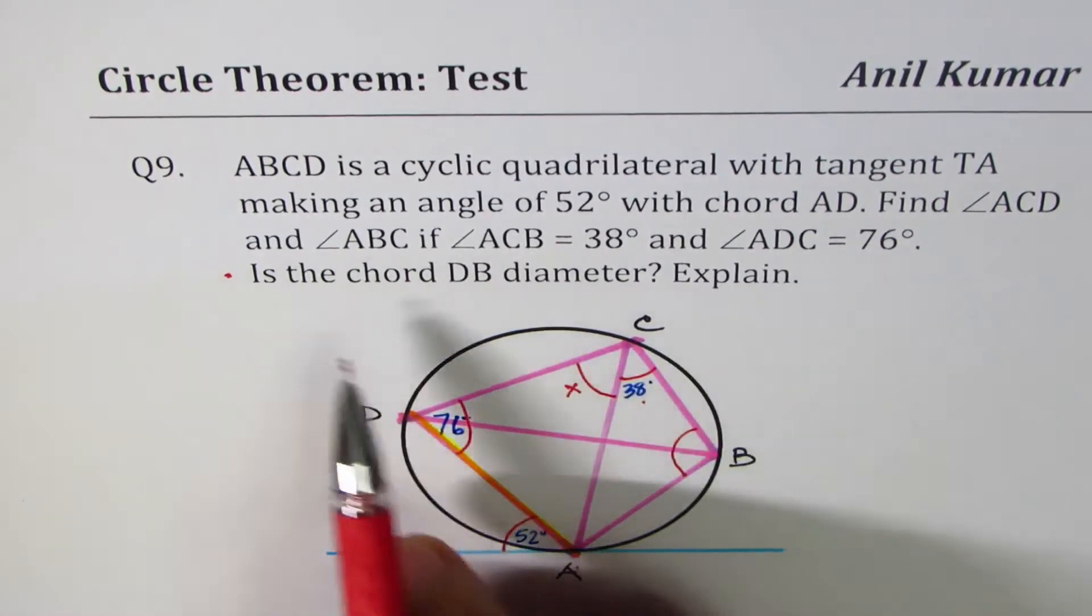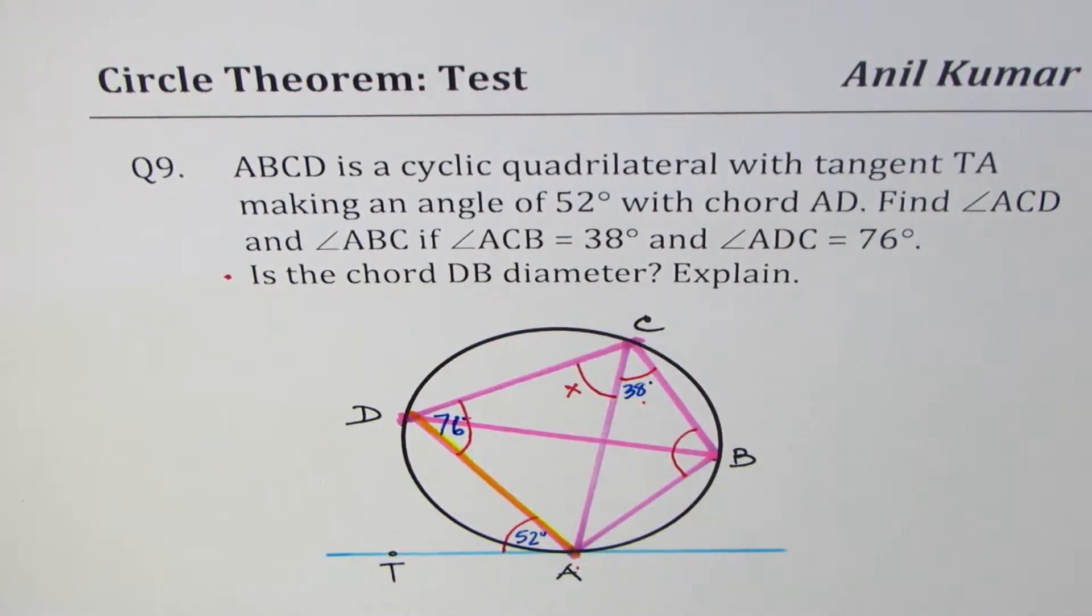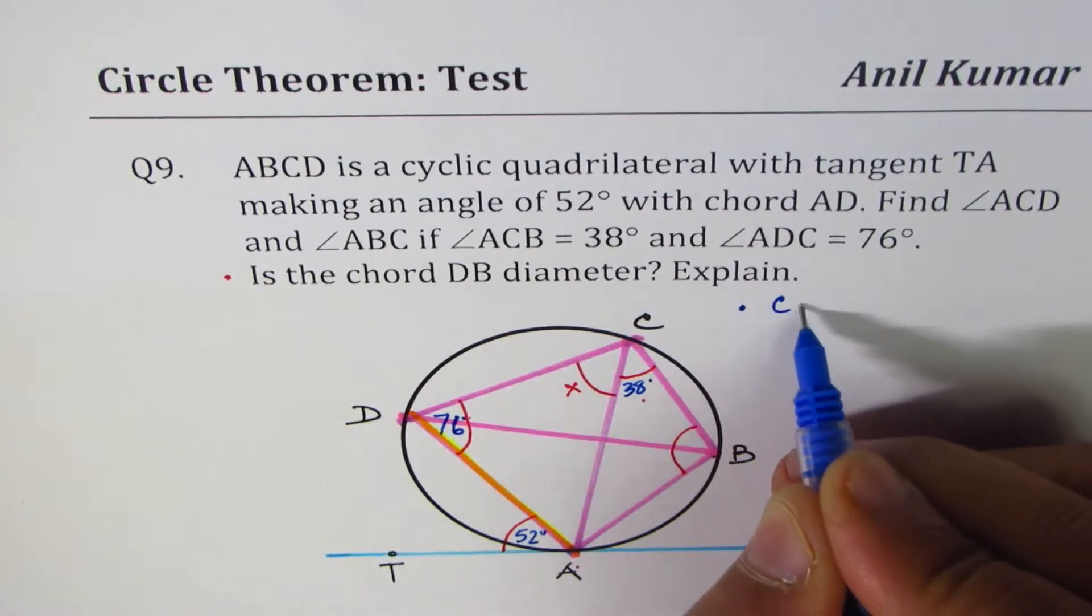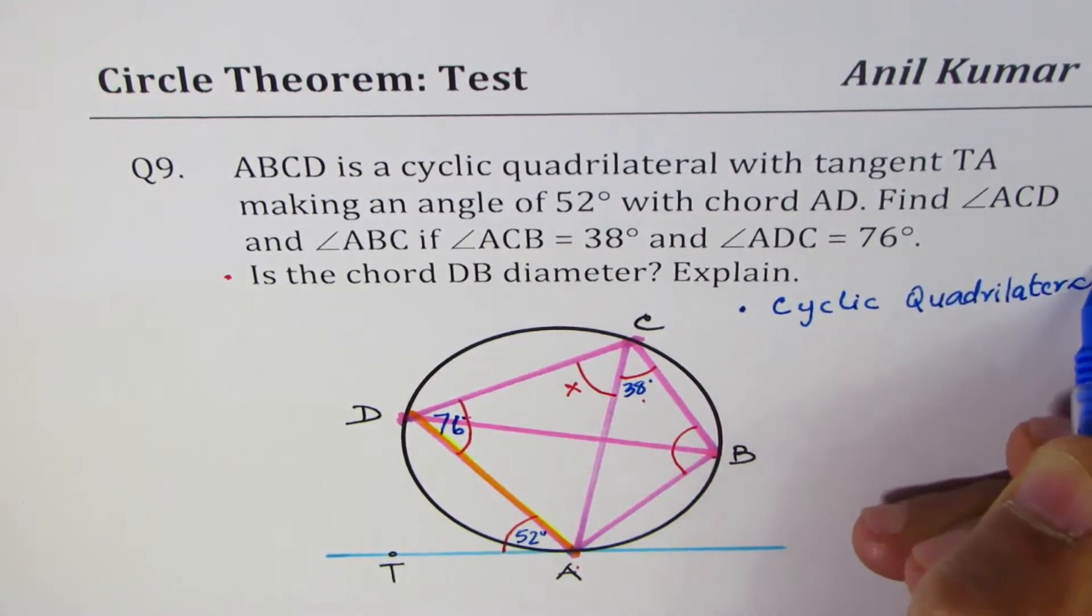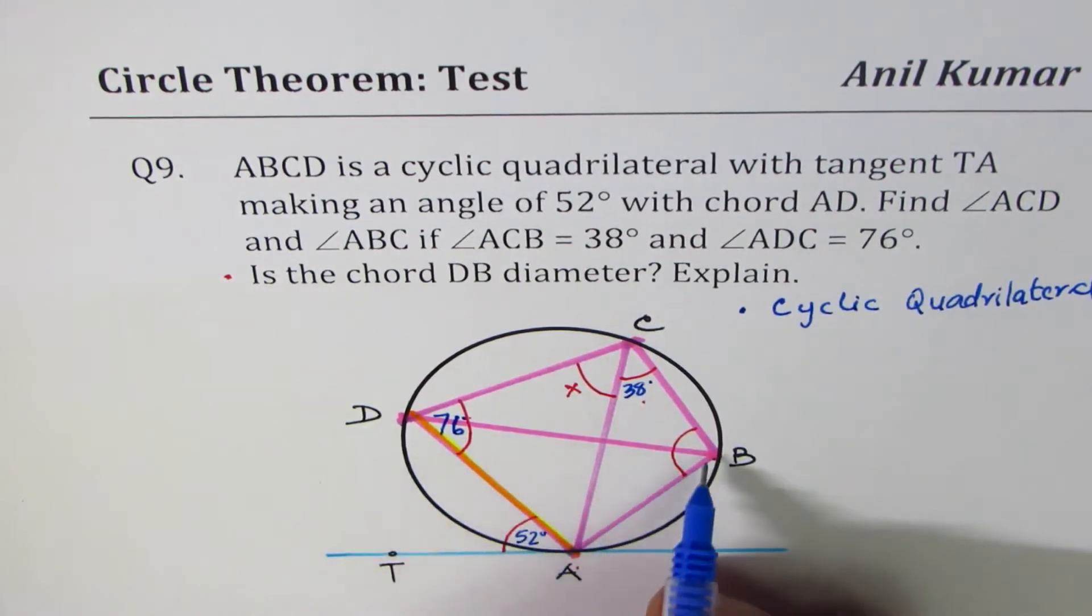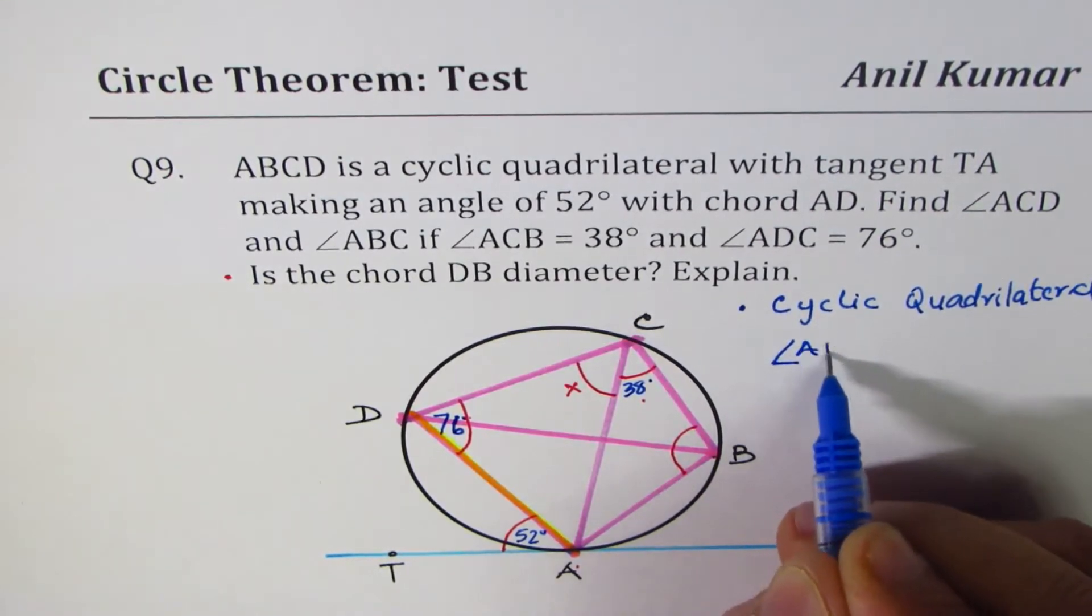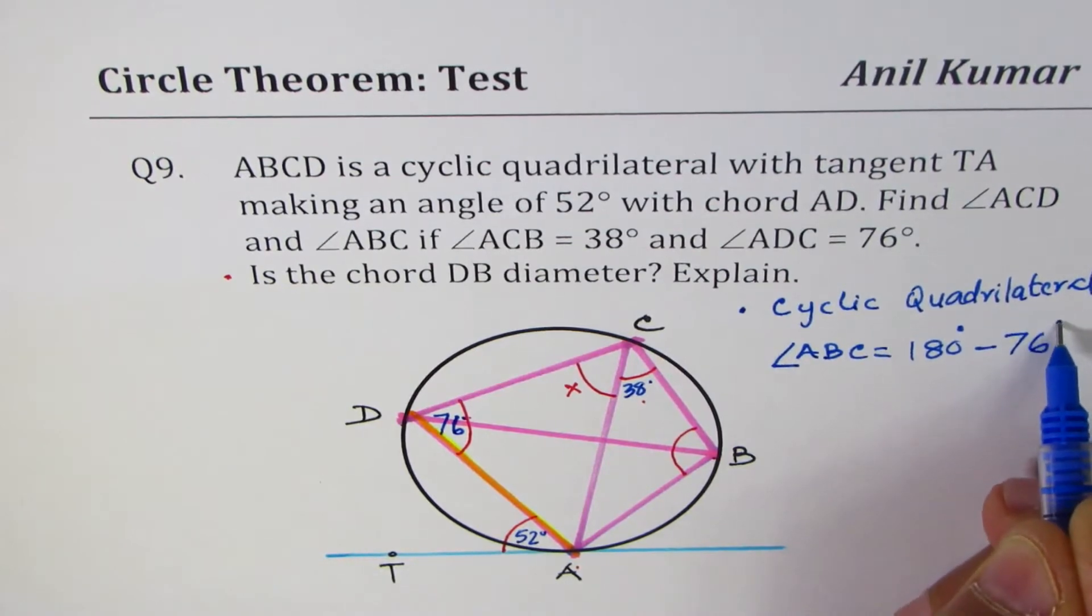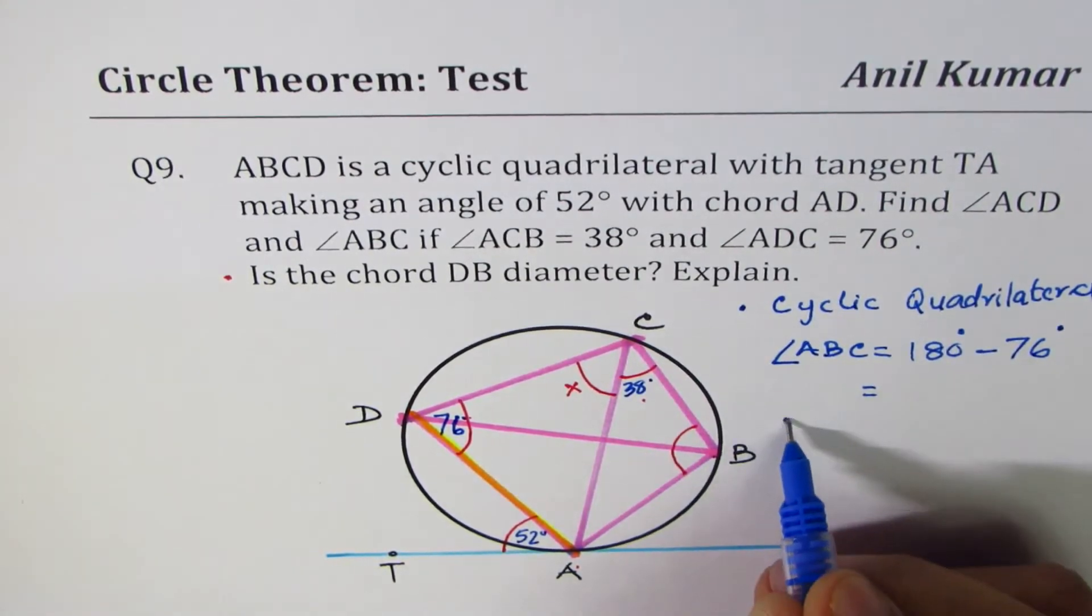The second part of this question is: is the chord DB a diameter? Explain. We can find the angles using the rules which you learned. We are given ABCD is a cyclic quadrilateral. If you have a cyclic quadrilateral, it means sum of opposite angles is 180 degrees. That gives you the angle ABC. Angle ABC should be equal to 180 degrees take away 76 degrees.